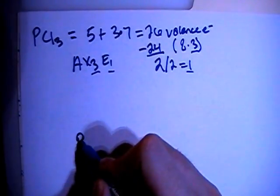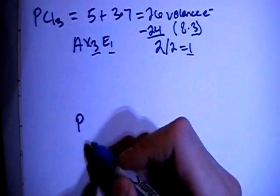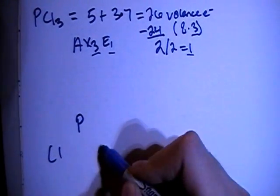We have the phosphorus in the center, surrounded by the 3 chlorines.